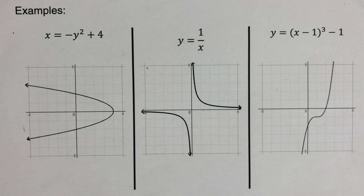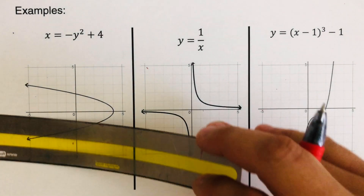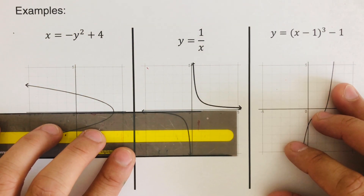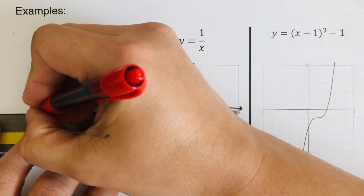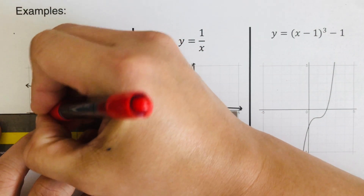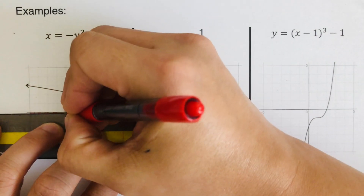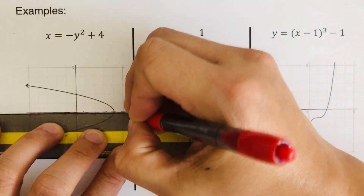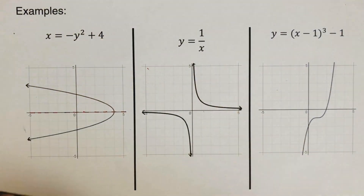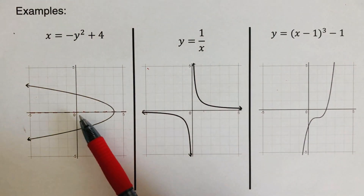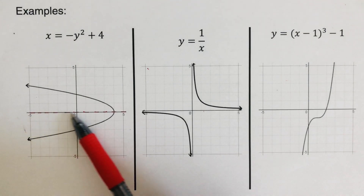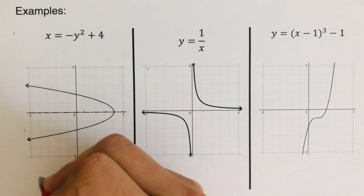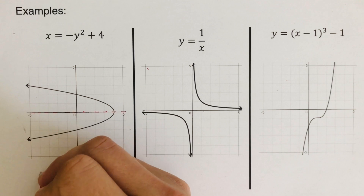Okay, so we go over this problem. In this case, the line of symmetry for this graph is the x-axis. We can go ahead and draw a broken line here. This makes sense because if we fold it through this line of symmetry — through the x-axis — both sides will match up.